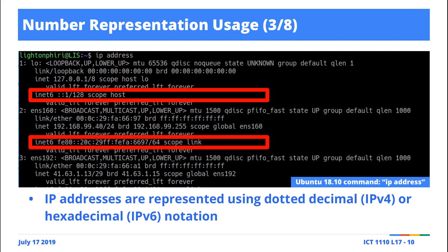Each machine — each computer — whenever you connect to the MTN or Airtel network using data, you have an IP address. You can check this: go to About Phone and check your IP address — it's unique. It's also dynamic, because every time you reconnect to the network you're issued a new IP address. But we're not here to talk about IP addresses — we're just emphasizing that these are applications. Think about number systems; let's not lose track of why we are here.